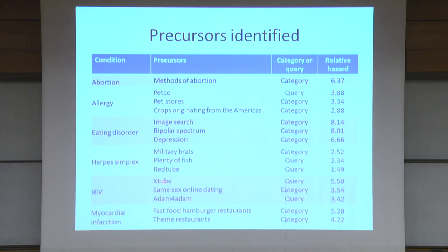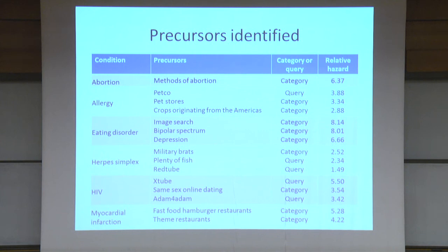For HIV, again, a porn site and online dating sites — homosexual online dating sites in this case — appear as precursors. Some of those are harder for us to explain. For example, why are heart attacks correlated with somebody visiting a fast food joint just before? We're not sure, but this is something that may be worth investigating by doing a clinical trial.